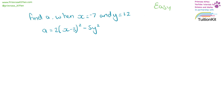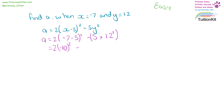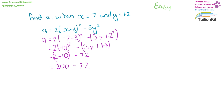Find a when x equals minus 7 and y equals 1.2. So a equals 2 open brackets, minus 7 minus 3, squared, minus 5 times 1.2 squared. Minus 7 minus 3 gives us minus 10, so that is minus 10 squared, and we need 2 lots of it, minus 5 times 1.2 squared. 1.2 squared is 1.44. Minus 10 squared is 100, so this is equal to 2 times 100, minus 5 times 1.44, which is 7.2. 2 times 100 is 200, minus 7.2. 200 minus 7.2 is 192.8.